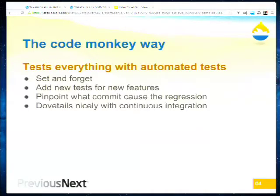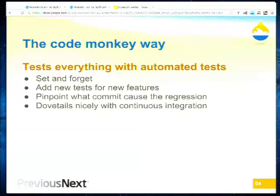And then the code monkey way — where we're going on this fantastic journey. You test everything with automated tests, you set and forget. You'd be foolish to think that just because you've got test coverage nothing's going to go wrong — there are degrees of test coverage. You've still got to make sure you've got coverage for the things that matter and that the tests are actually being run. But it dovetails nicely with continuous integration and gives you an opportunity to pinpoint when things stop working.